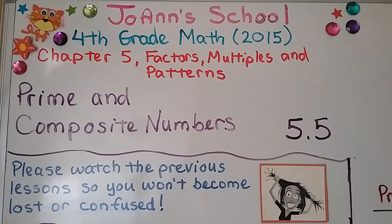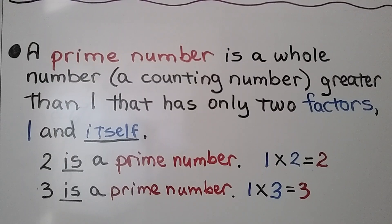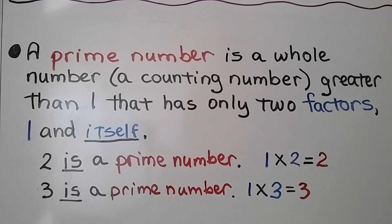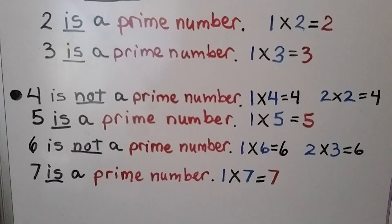Lesson 5.5: prime and composite numbers. A prime number is a whole number — a counting number greater than one — that has only two factors: one and itself. So 2 is a prime number because it's 1 times 2, and 3 is a prime number because it's 1 times 3. They only have two factors: 1 and themselves.